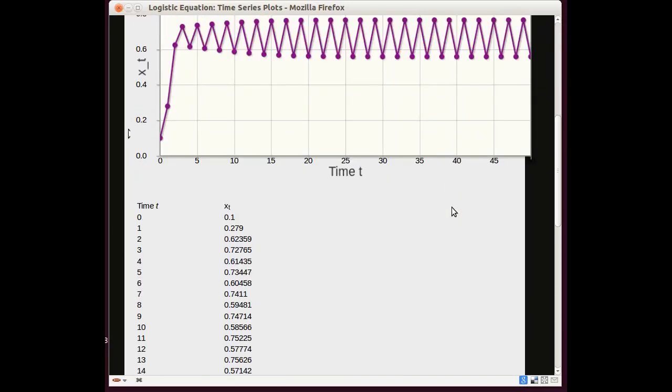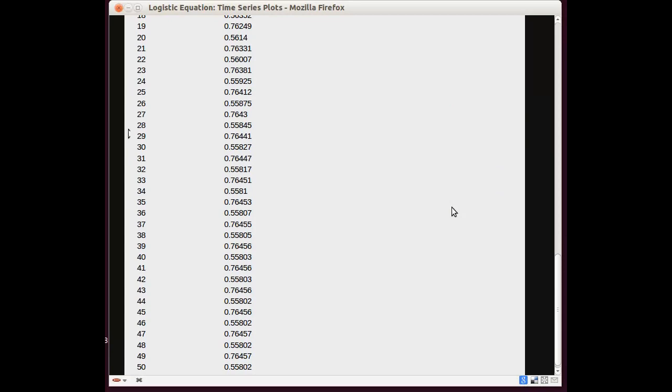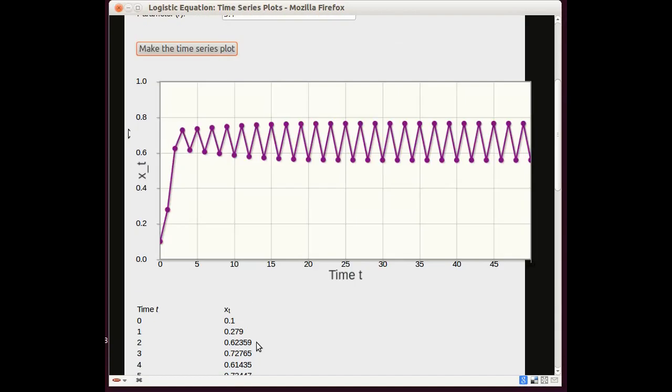Let's look down at the iterates and we can see that the number is jumping between 0.55802 and 0.76457. So it's a cycle. We would call this a cycle of period 2 because it takes two iterations to complete a cycle.